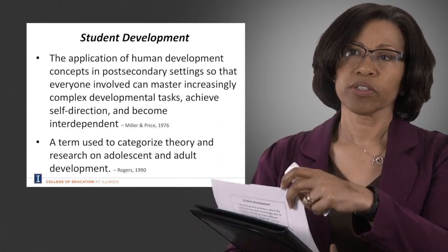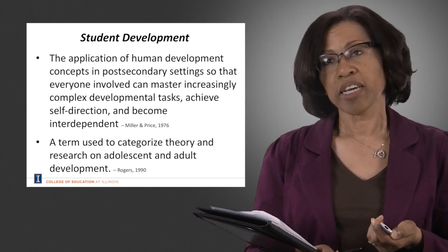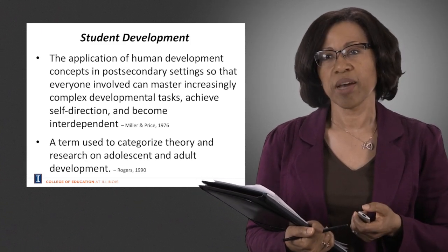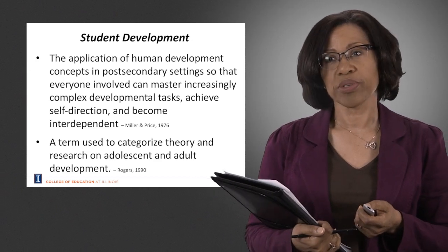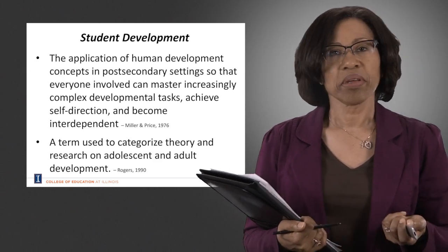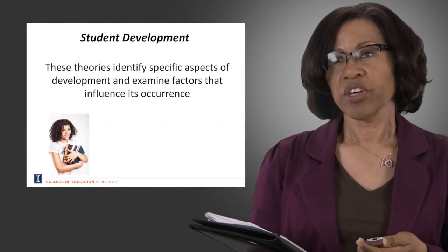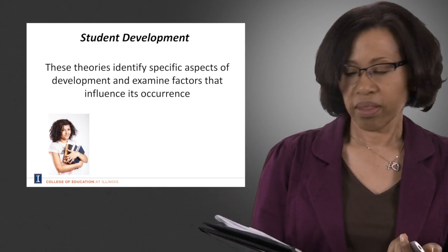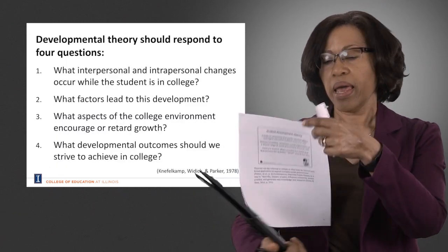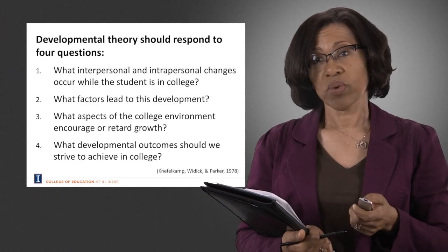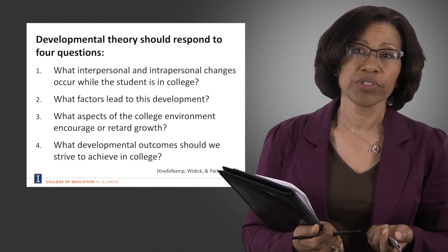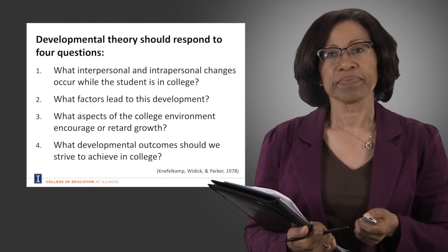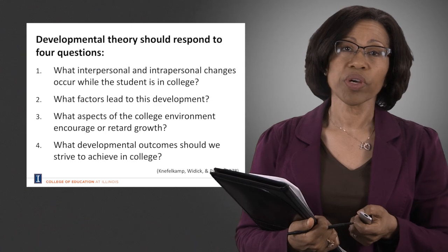The definition by Miller and Price looks at a post-secondary context in terms of the types of skills and behaviors that a student should accomplish by the time they finish. The definition by Rogers captures that idea about adolescent and adult development as they move through college. These theories tend to identify the specific aspects of development that examine factors that influence their occurrence. Developmental theory should answer four questions: what interpersonal and intrapersonal changes occur while the student is in college; what factors lead to this development; what aspects of the college environment encourage or retard growth; and what developmental outcomes should we strive to achieve in college?